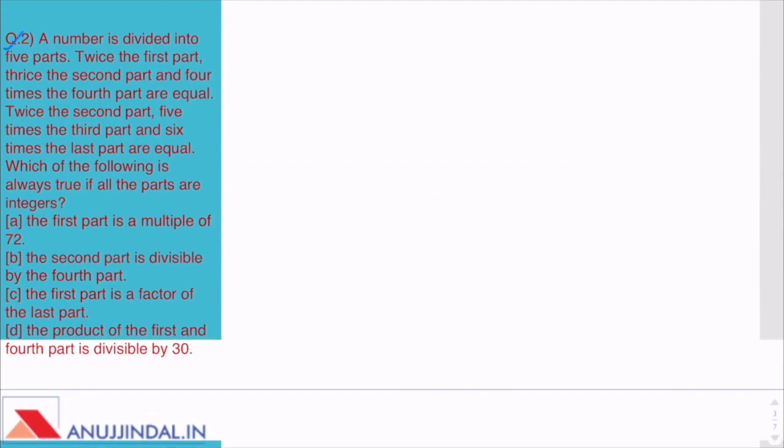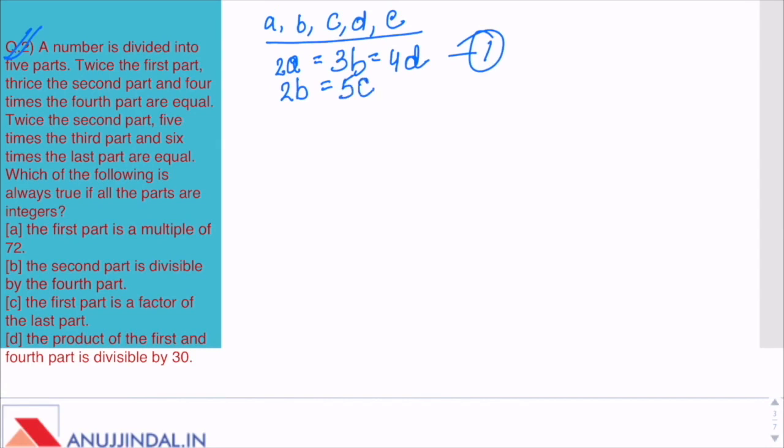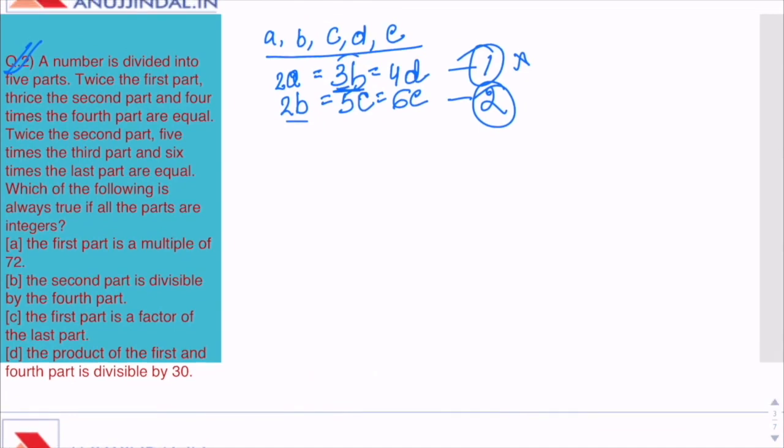Question 2: A number is divided into 5 parts. This is a long question. While reading a long question, we should read it very slowly and simultaneously keep writing the information we have. Don't be scared using so many variables because we do not have to find their values individually. Twice the first part is thrice the second part, 4 times the fourth part - Equation 1. Twice the second part is 5 times the third part, 6 times the fifth part - Equation 2. B is the common element in both equations, so we will make the coefficient of b equal. We multiply equation 1 by 2 and equation 2 by 3.